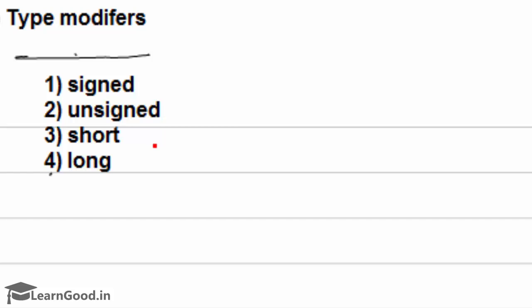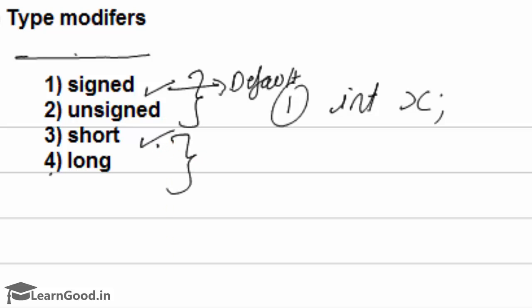These are the 4 type modifiers. Now, whenever you give here just as int x, by default it takes it as signed and short. So if you don't mention whether it is signed or unsigned, always the default one will be taken as signed. Same way, if you don't mention here whether it is short or long, the default will be taken as short.